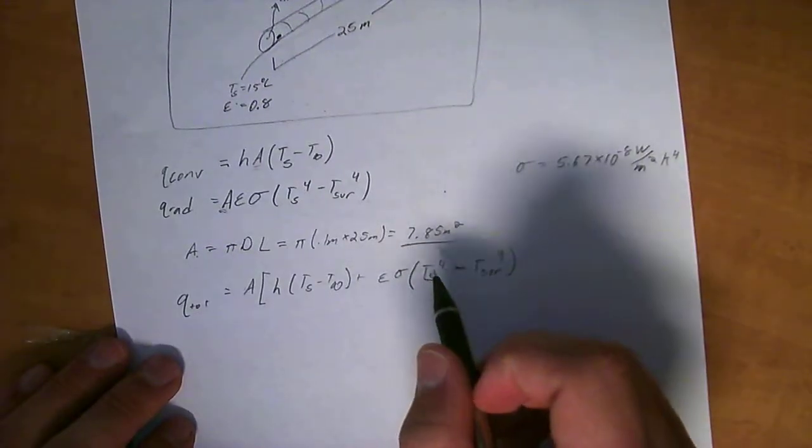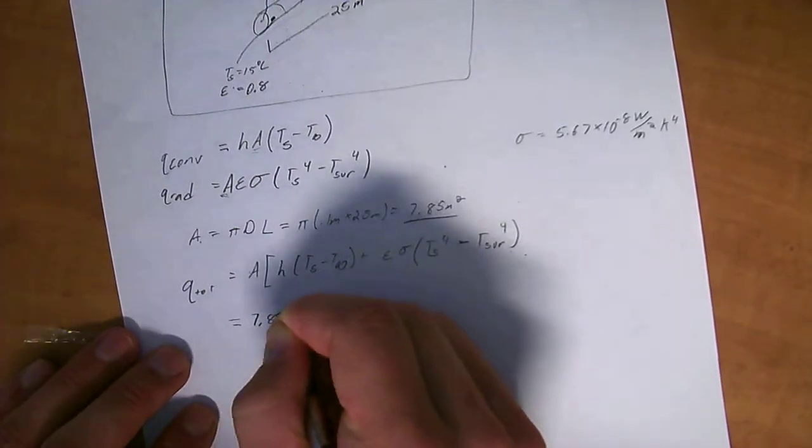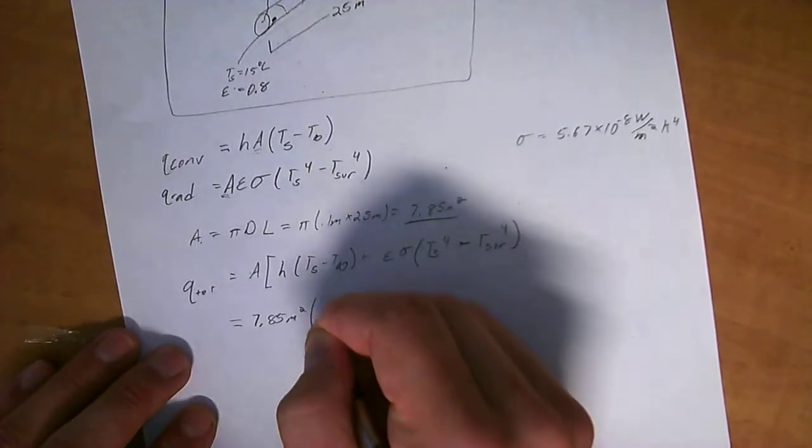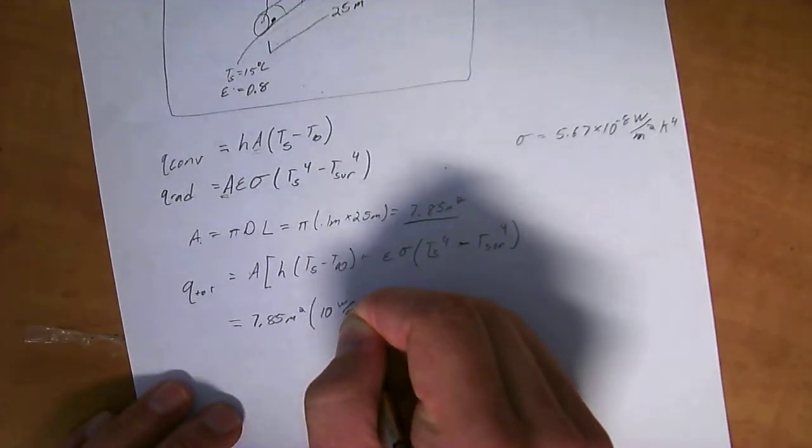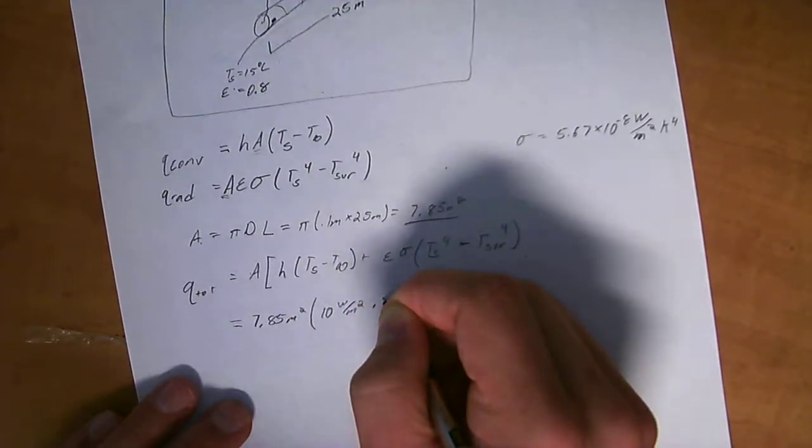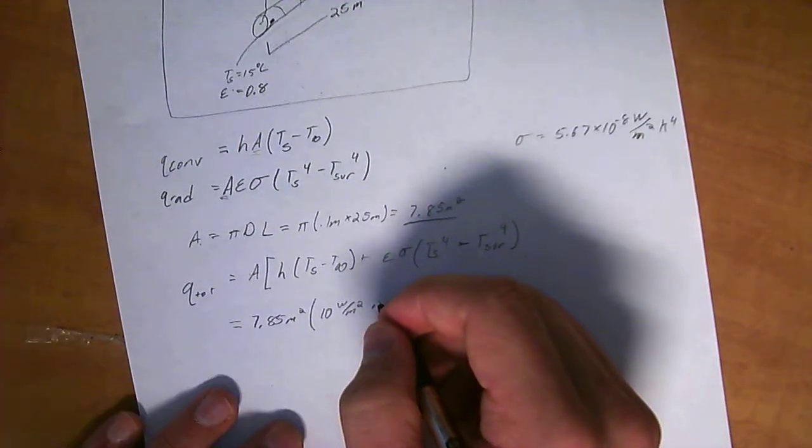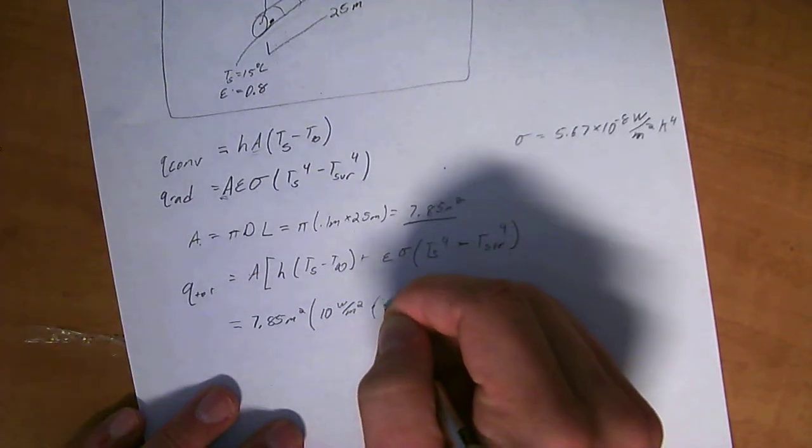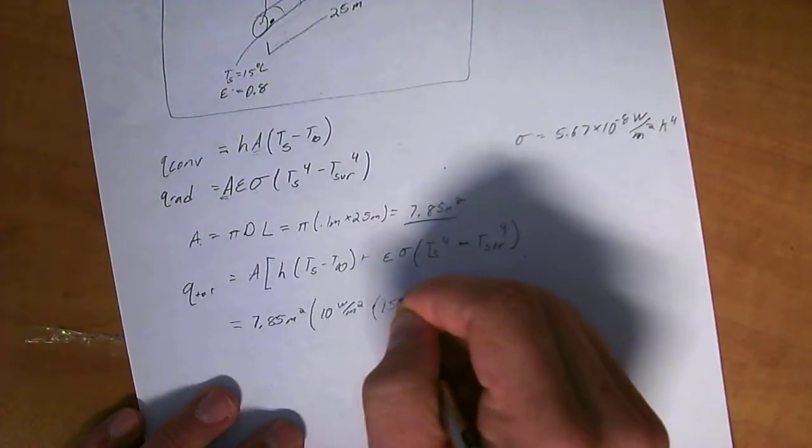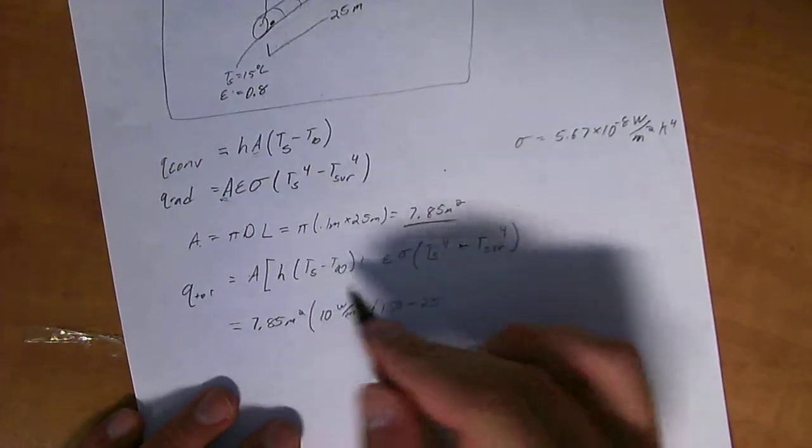Okay. So, moving on there, going ahead and just putting the numbers in now. It's actually pretty easy. 7.85 meters squared times 10 watts per meter squared times... Okay. We're going to, let me make sure I'm doing this right. Okay. Yes. Times the temperature is 150 minus 25, because you always take the highest and the lowest, or in this case, T_s to infinity.